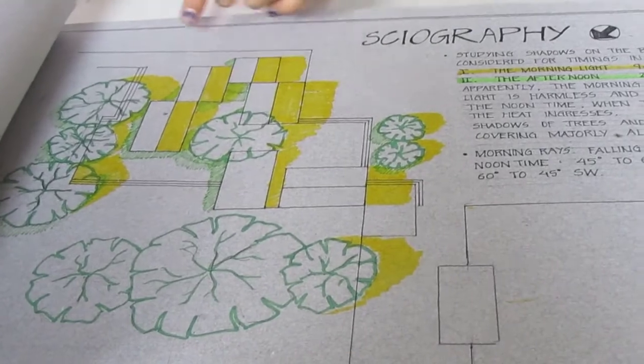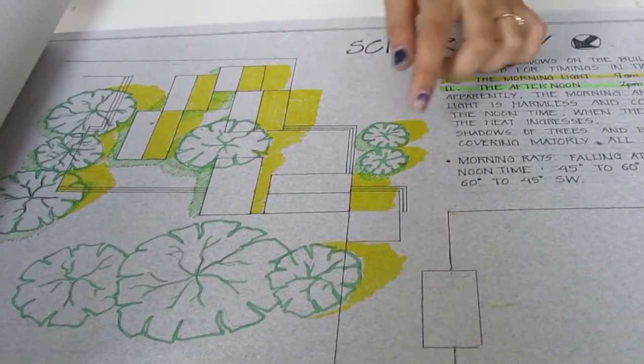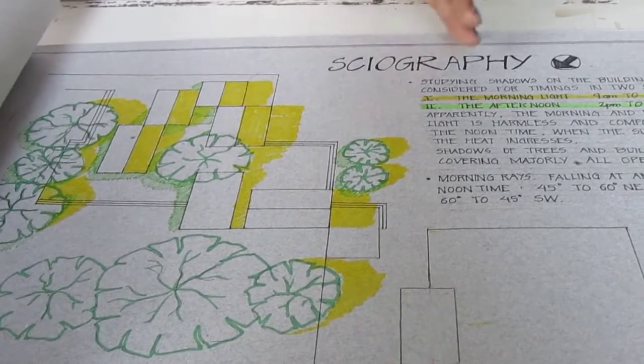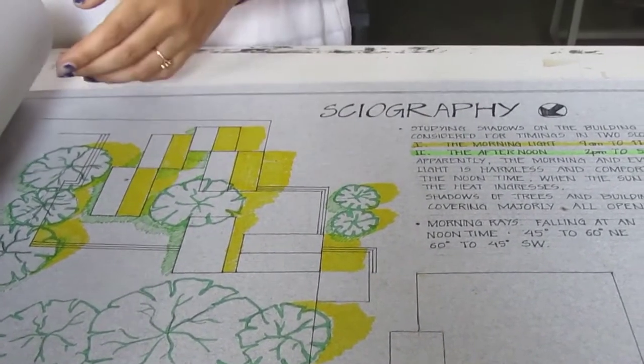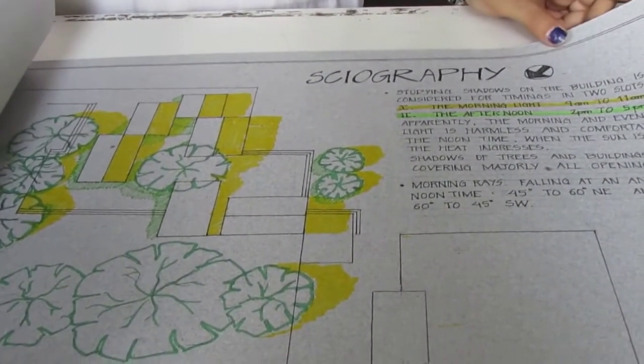And the green depicts the afternoon. So this is how the trees and the buildings are relating to each other in the point of making shadows and keeping the place comfortable.